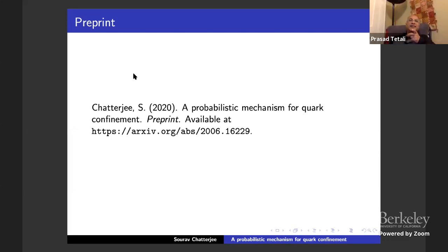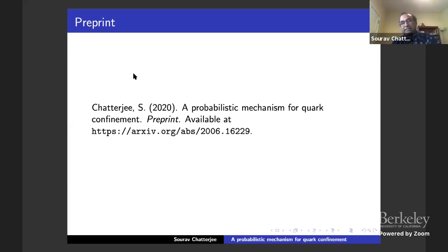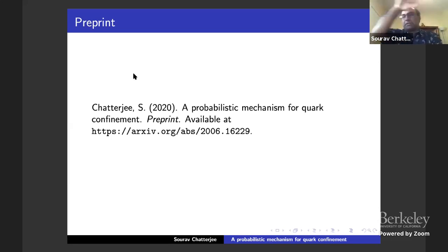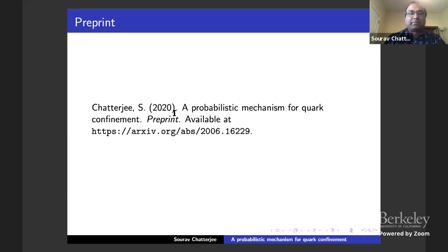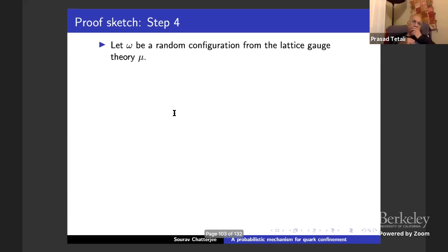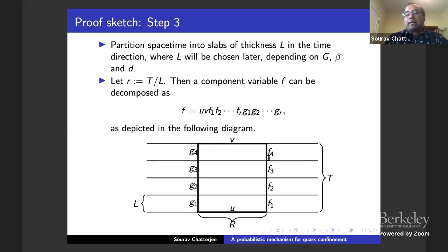One more question: why does it grow like the area rather than the perimeter? That was the main insight from this proof. You have this big loop, you multiply the matrix along this loop, then you condition on the boundaries between slabs. The loop passes through the slabs in two strands, and due to the non-triviality of the center and the nature of lattice gauge theory, even after conditioning on the slab boundaries, the contributions from the two strands have expectation zero, forcing the area-law behavior.